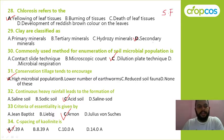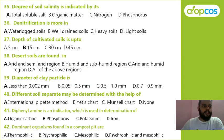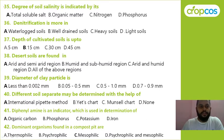The questions so far are from soil fertility, soil mineralogy, soil biology, soil conservation, soil acid chapter, soil fertility again, and soil mineralogy. Degree of salinity — soil salinity is indicated by total soluble salt, organic matter, nitrogen, or phosphorus? Correct answer is total soluble salt.